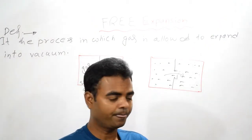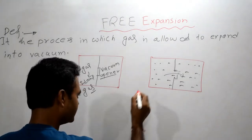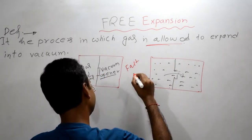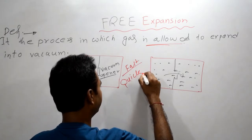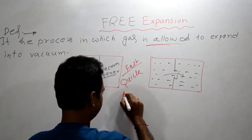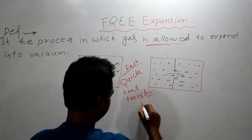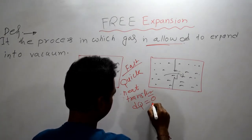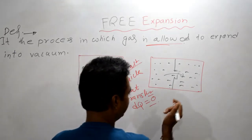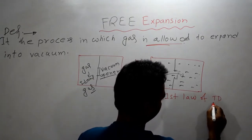Now let's understand one major thing. This process is very fast — so quick that there is no heat transfer. No heat transfer means dQ is equal to zero.